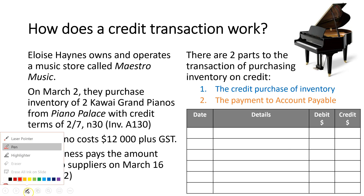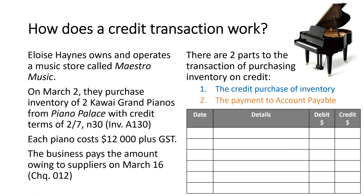Let's look at a scenario. On March 2nd we purchased two Kawai Grand Pianos with credit terms of 2/7 N30 — we'll talk about what that means later. Each piano cost $12,000 plus GST. We didn't actually pay the amount owing to Piano Palace until March 16. So there are two parts to the credit transaction: part one is the credit purchase of inventory on March 2nd, and part two is the payment which occurs later on March 16.